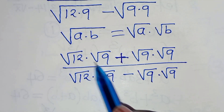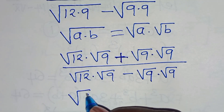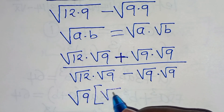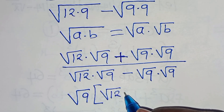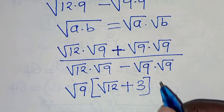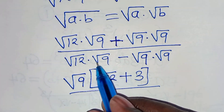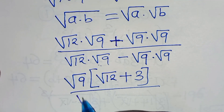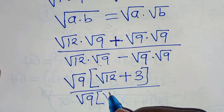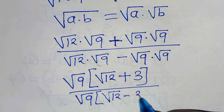We find that square root of 9 is common here, so we can factor out square root of 9, so that in the parentheses we have square root of 12 plus square root of 9 which is 3, divided by square root of 9 factored out again, so that into the parentheses we have square root of 12 subtract square root of 9 which is 3.